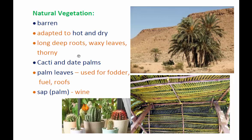The palm leaves are used for fodder — that is, food for cattle and animals — and also used as fuel for cooking. As you can see from the picture, people also use palm leaves to cover themselves from the heat and cold; they use them as roofing. The sap of the palm tree is used for making wine. In the picture you can see different types of cacti — cacti being the plural form of cactus.